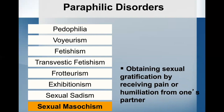In sexual masochism, it's six months of recurrent and intense sexual arousal from the act of being humiliated, beaten, bound, or made to suffer. These cause clinically significant distress or impairment. Population prevalence of sexual masochism disorder is unknown, but one study in Australia estimated that 2.2 percent of males and 1.3 percent of females have been involved in bondage and discipline behaviors within the last 12 months.